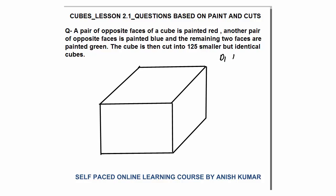I have three directions: D1, D2, and D3. How many cuts should I make in each direction to get 125 pieces? I will make 4, 4, and 4 cuts. So I will get 5 × 5 × 5, that is 125 pieces. So I will make 4 cuts in each direction.